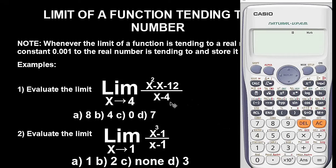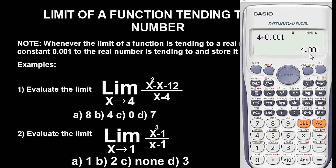The next thing we are going to do is add 0.001 to 4 and store the value as x in the calculator. So we have 4 plus 0.001. We can convert this to a decimal value. To store this value as x, press Shift, then the store button (STO), then press the x button. You will see an indicator that this value has been stored as x in the calculator.